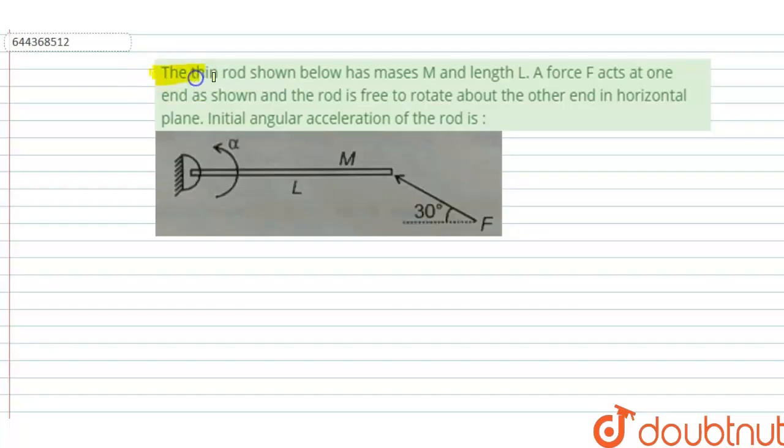Hello, welcome to Doubtnet. In this question given, the thin rod shown below has mass capital M and length L. A force F acts at one end as shown and the rod is free to rotate about the other end in a horizontal plane. Initial angular acceleration of the rod is.